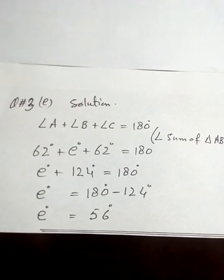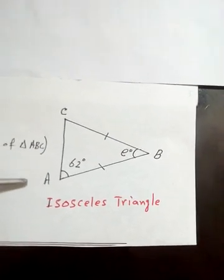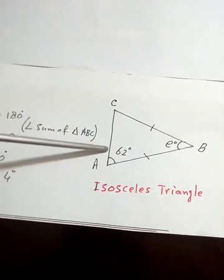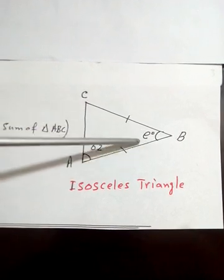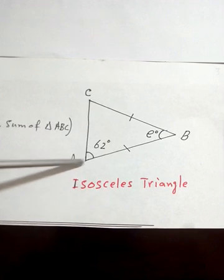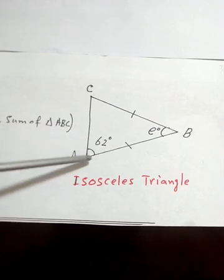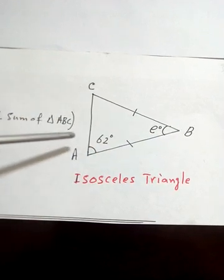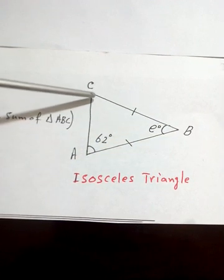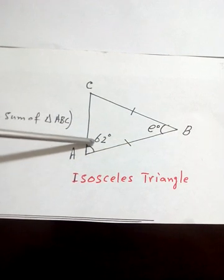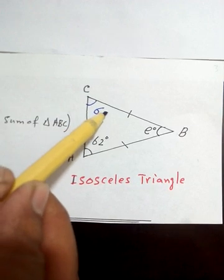Question number three, part E: this question is also about an isosceles triangle. In the book, the diagram shows triangle ABC where angle B is e degrees and angle A is 62 degrees. You must recognize whether angle C is 62 or e. Sides AB and BC are equal in length — the two small tick marks show this. The angle opposite to side AB is angle C, and the angle opposite to side BC is angle A, which is 62 degrees. These are the base angles, so angle C is also 62 degrees.